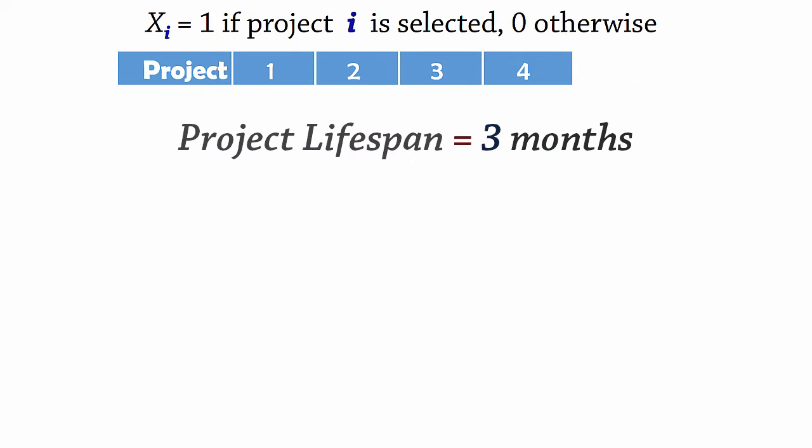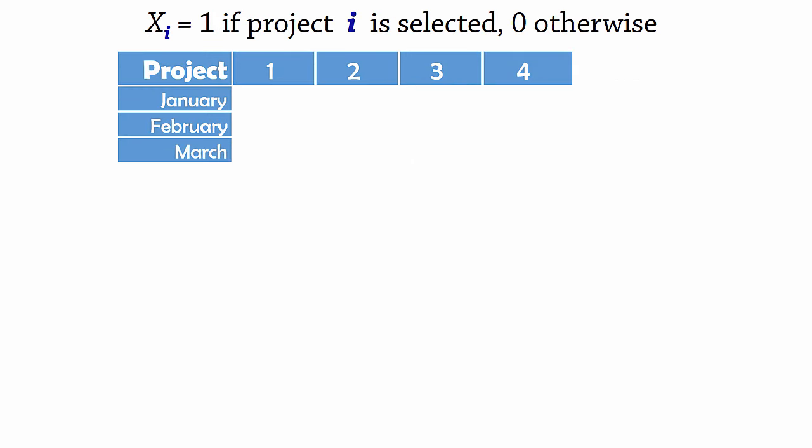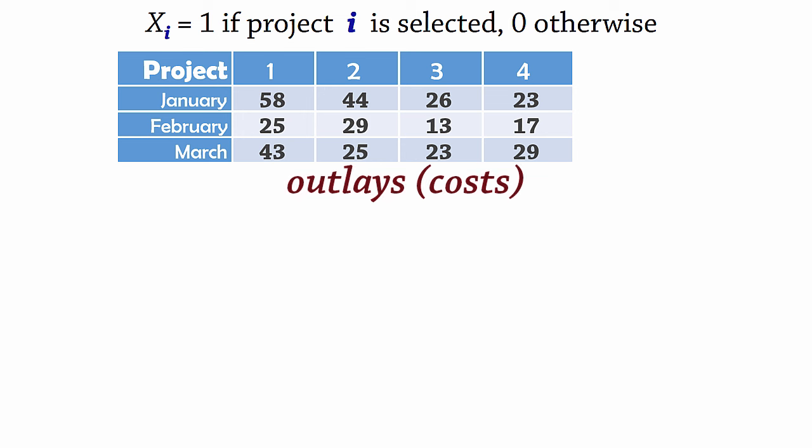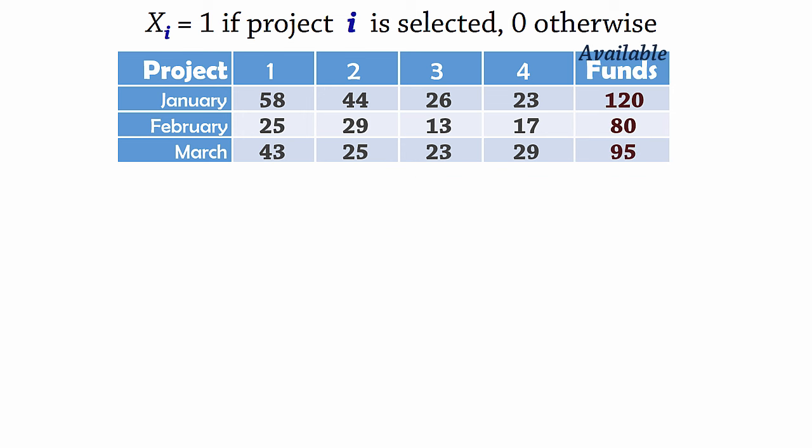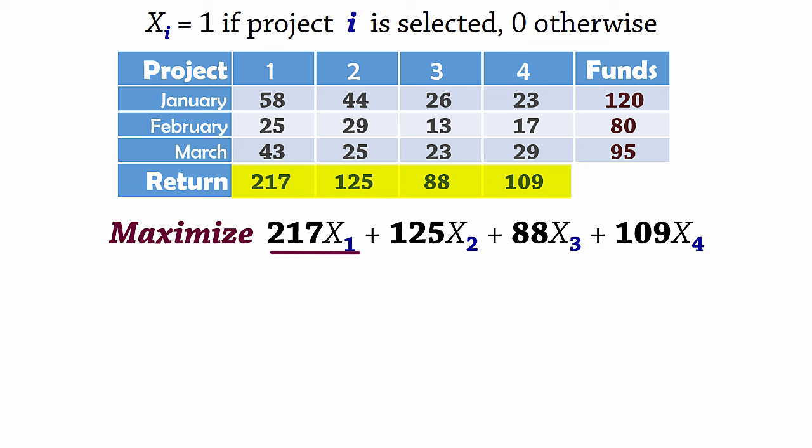Now, suppose each project has a lifespan of 3 months, January to March, with corresponding outlays or costs in thousands of dollars shown here. Suppose these are the funds available for selected projects each month and these are the net returns in thousands of dollars from each project. In this case, our objective is to maximize return, which is 217x1 plus 125x2 plus 88x3 plus 109x4.